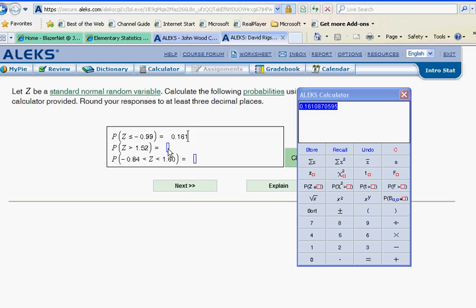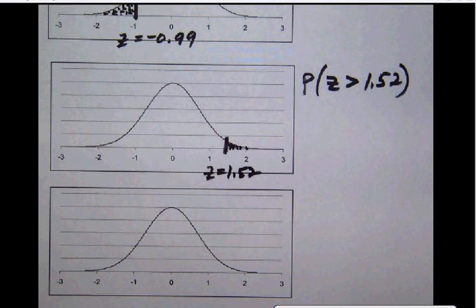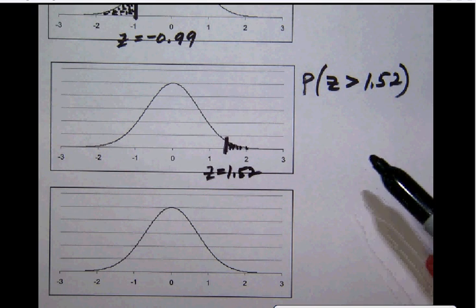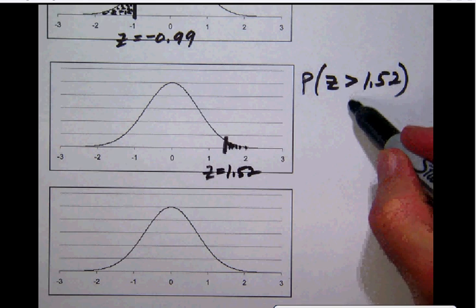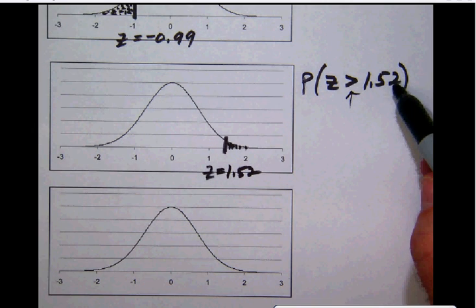Now we get to our second problem, and let's take a look at it. We have the probability, the area under the curve to the right, notice a greater than sign, says the area under the curve to the right of a positive 1.52. And again, on our picture, notice then that we read this. What is the area under the curve to the right of a positive 1.52?